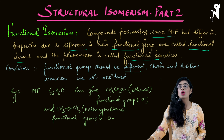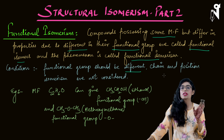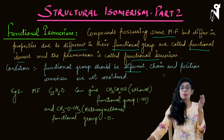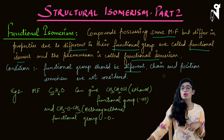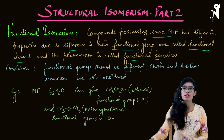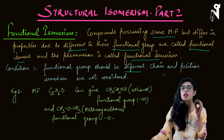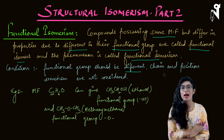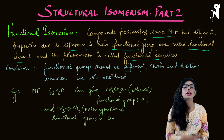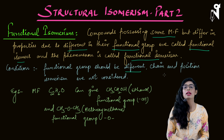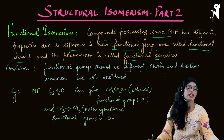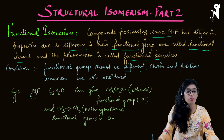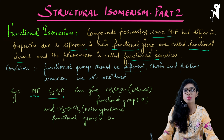It is mandatory for the functional group to be different. Chain and positional isomers will not be considered — if there is only a difference in the chain or difference in the position of the functional group, that will not be considered as functional isomerism. Functional isomers are the ones where there must be a difference in the functional group.